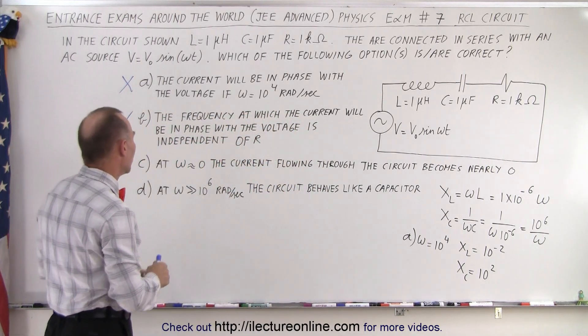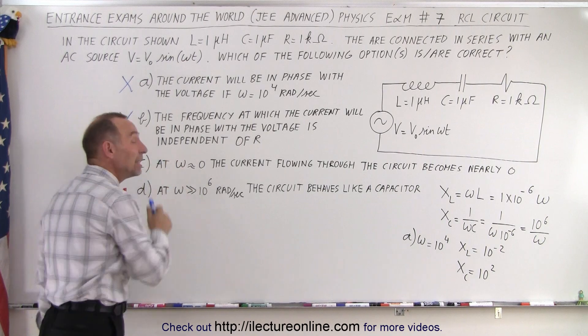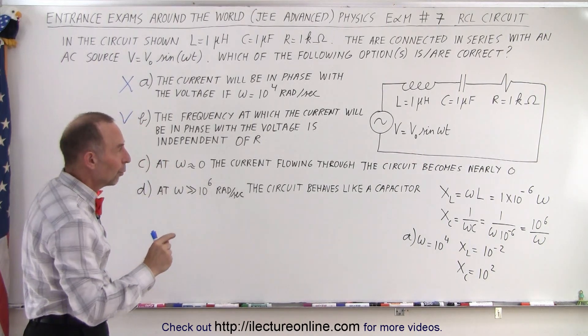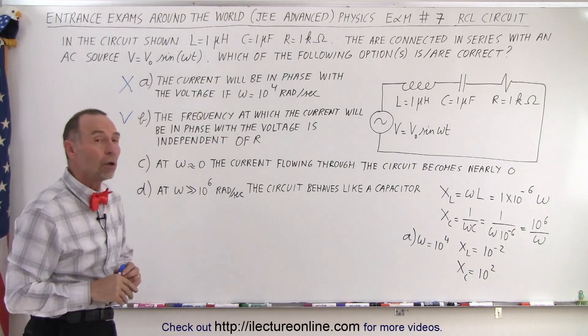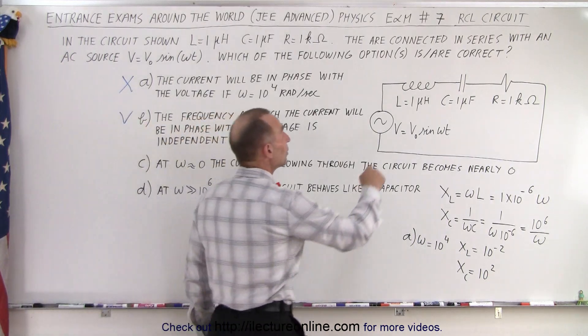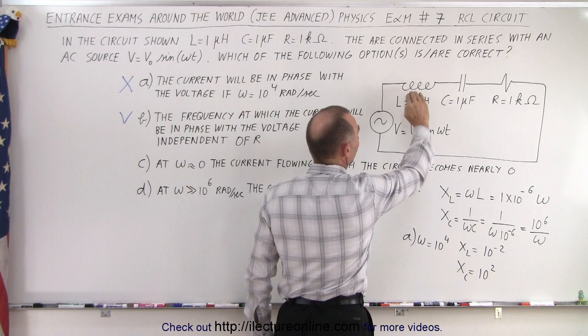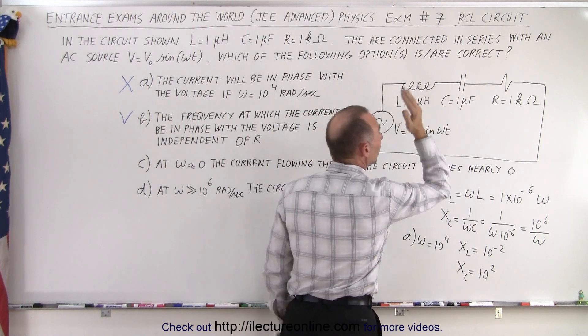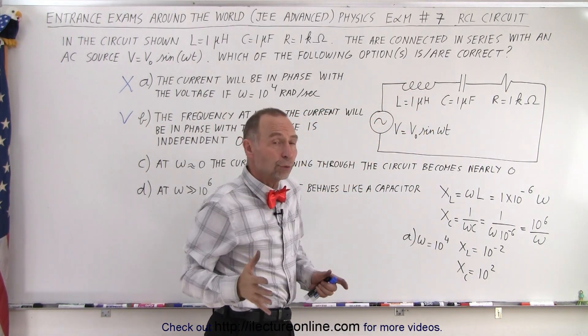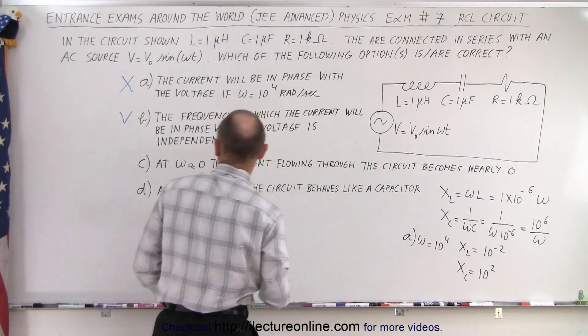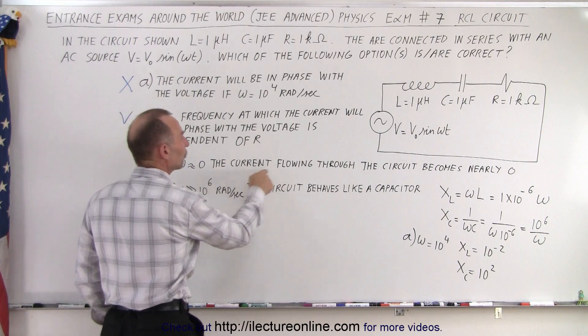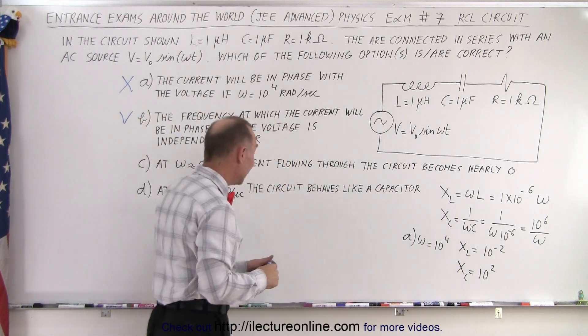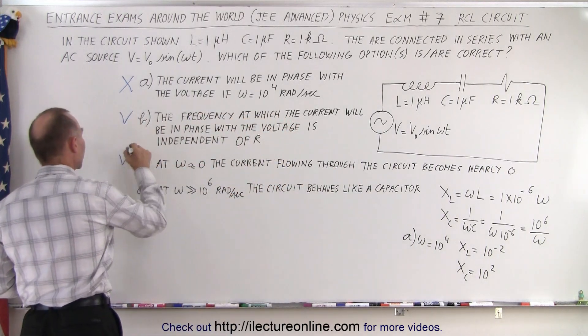How about part C? When omega approaches zero, when the oscillations on the voltage become very small, the inductor essentially becomes a short circuit and the capacitor essentially becomes an open circuit. That means no current would flow through the circuit. At omega approximately zero, the current flowing through the circuit becomes nearly zero, and that would be a correct statement.